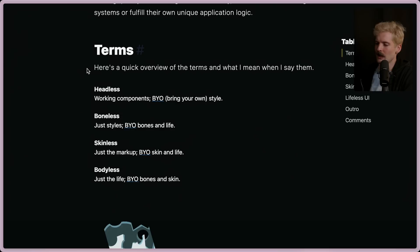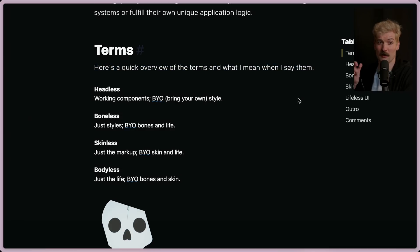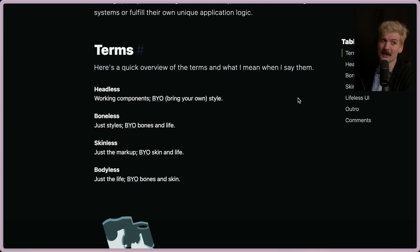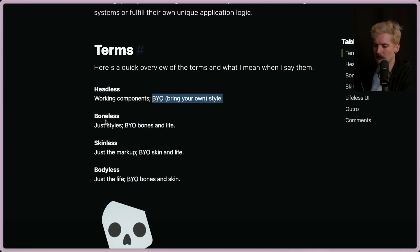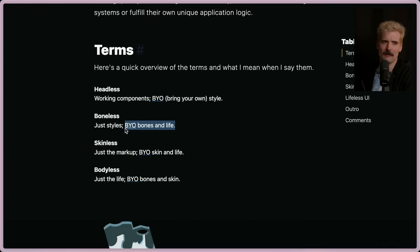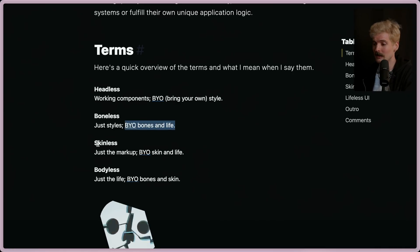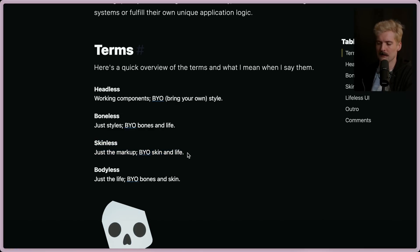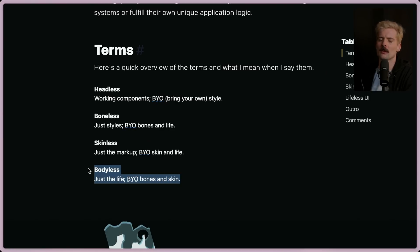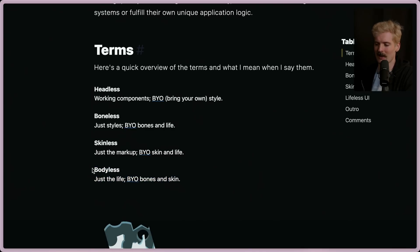Here are the terms as defined by Adam. Reminder that none of these are real terms yet, but I can see them catching on. We've got Headless, which is working components that don't have styles — you bring those yourself. There's Boneless, which is just the styles, so you bring your own life — you provide the thing the styles are attached to as well as the logic. Skinless is just the HTML part — you have to bring everything else. And Bodiless is the state part, like a useSelector hook or useInput in React. It doesn't provide any markup or styling at all — it's just the state.